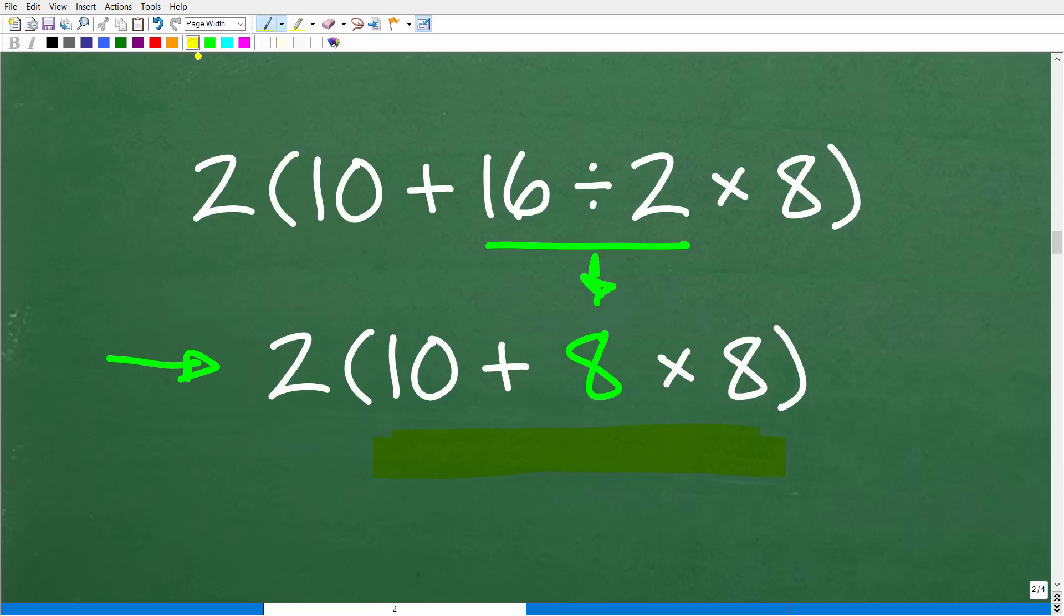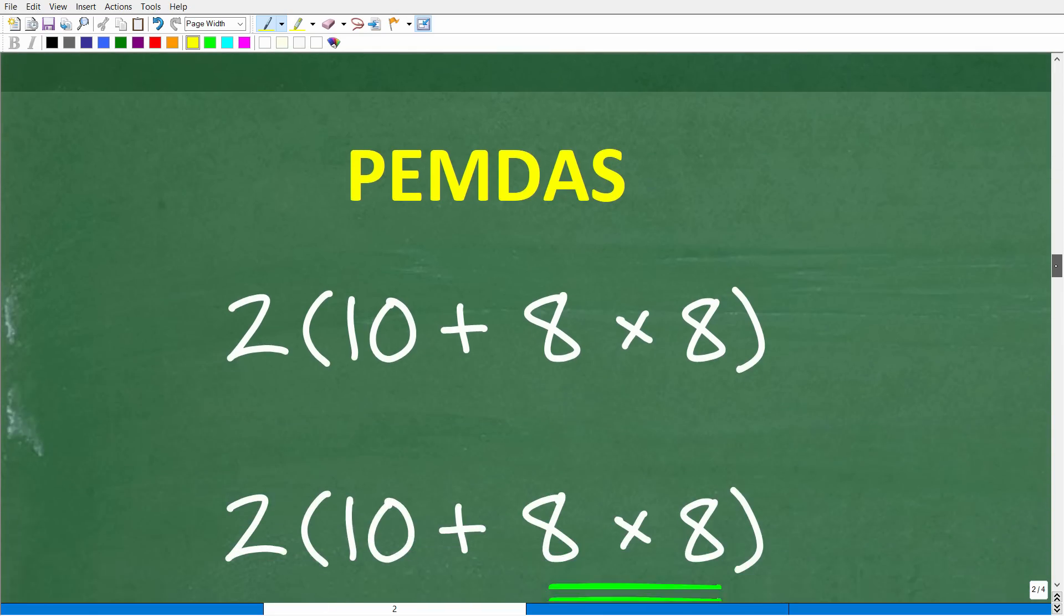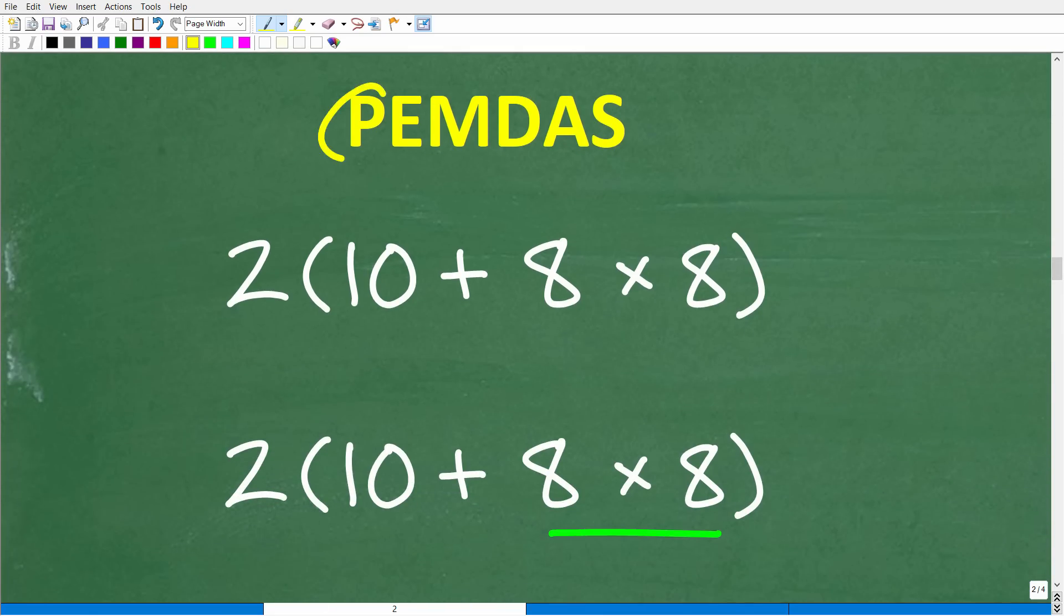So here we have addition and we have multiplication. Hopefully, all of you are saying, when it comes to PEMDAS, multiplication definitely always trumps addition and you would be right. So here is what we need to do next. We're still inside parentheses. There's no powers. Do we have multiplication and division? Yes, we took care of division. Do we still have any multiplication or division left? Yes, we do. So we're on that step right here. So 8 times 8.